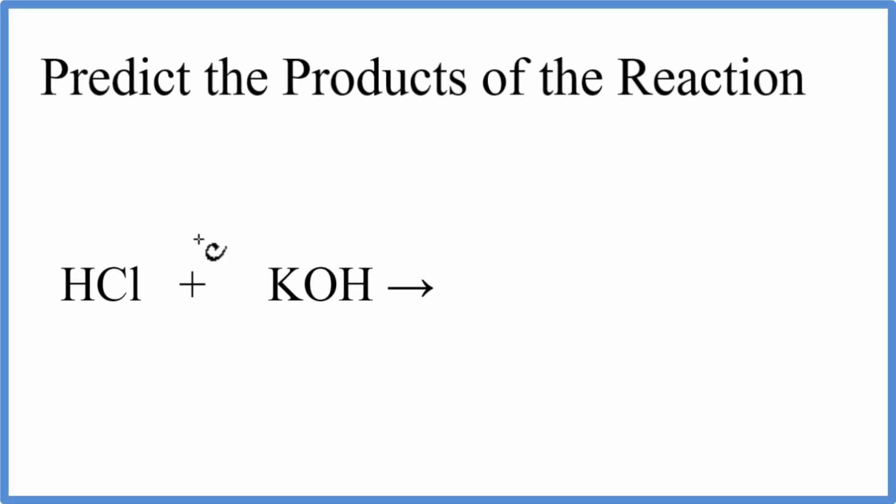To predict the products of the reaction between hydrochloric acid and potassium hydroxide, we need to first recognize what type of chemical reaction we have.